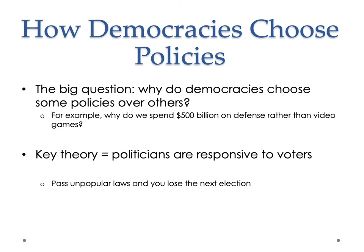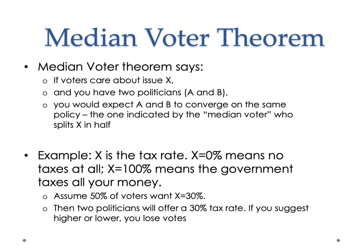One major theory of democracy is median voter theory. The median voter theorem says that if voters care about an issue and you have two politicians running, you would expect those two politicians to converge on basically the same policy position, because people care about this. So if half the voters want a tax rate of 30%, politicians will converge on a tax rate of 30% because that will allow them to win the election. Politicians move towards the median voter — the average voter.